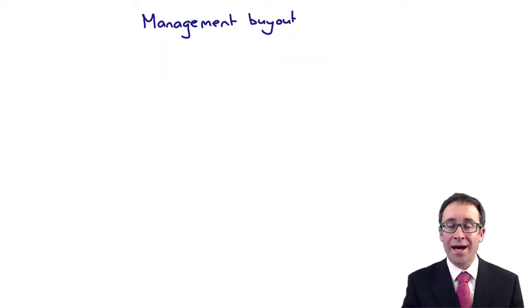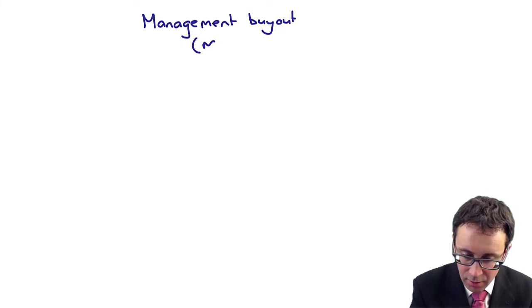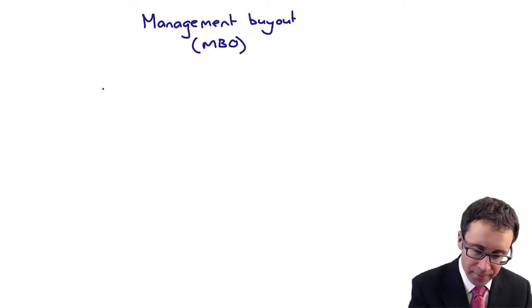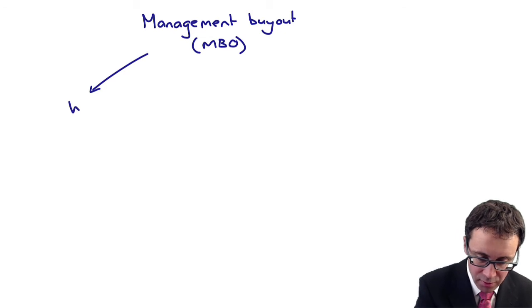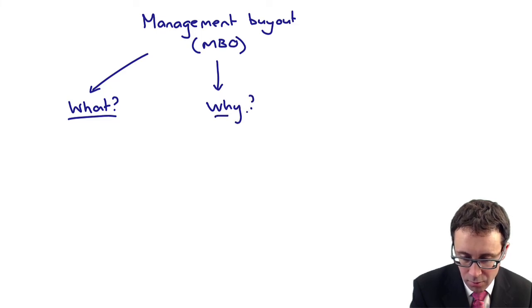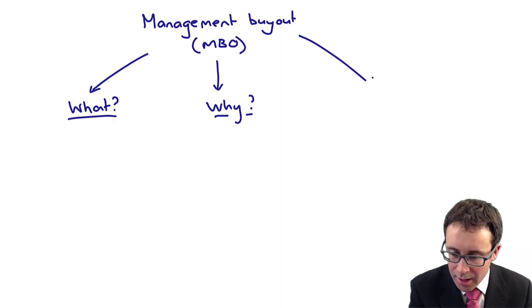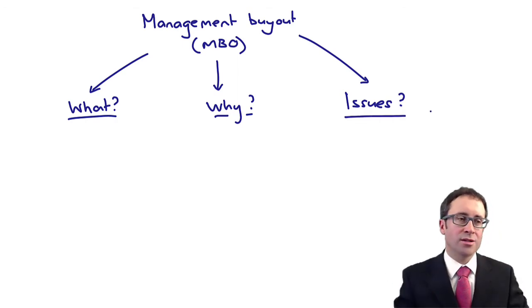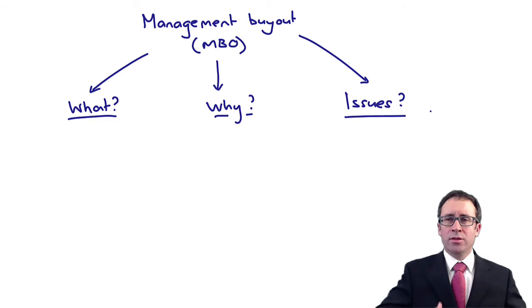What we're going to do now is look at a particular part of an exit strategy, which is your management buyout. So let's have a look at a management buyout, abbreviated to MBO. What we've got to do is, from your perspective, you need to think about what a management buyout is—I think it's quite literal, quite easy to understand—why would that actually happen, and are there any issues that you need to consider?